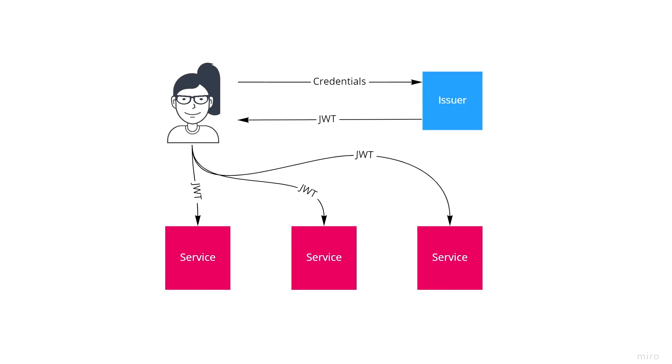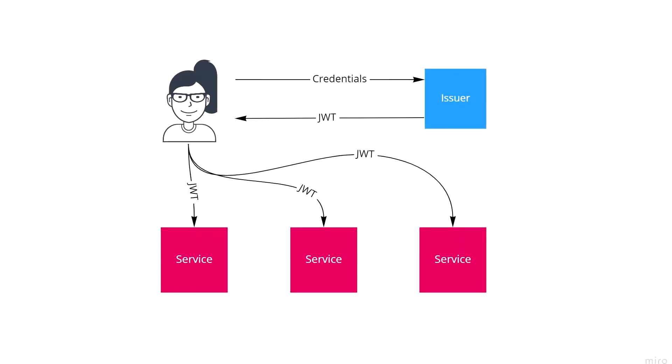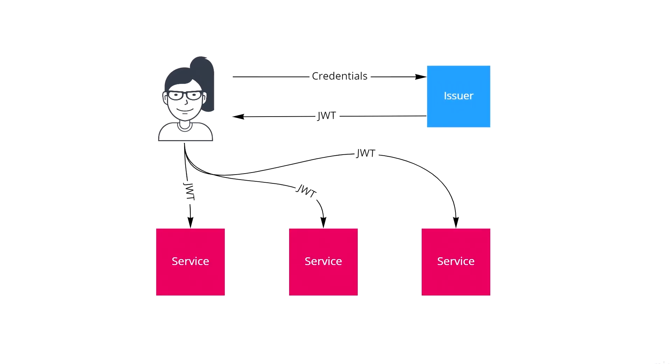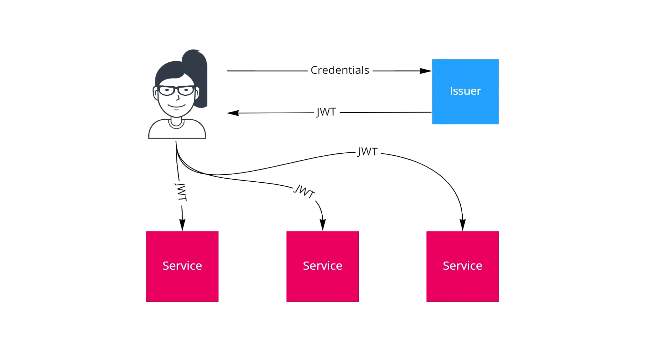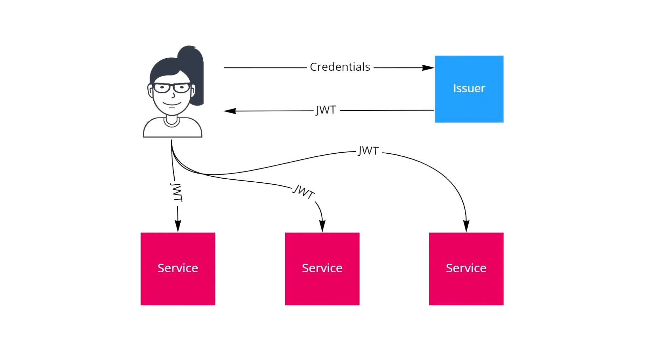As a result, every application, every system — microservice, frontend, or backend — that trusts the issuer should also trust every request that holds a JWT issued by that specific issuer. One of the main concepts of the whole JWT architecture is trust delegation. As the microservice, you do not verify everything yourself — you delegate the trust to someone else, and that someone else is the issuer.